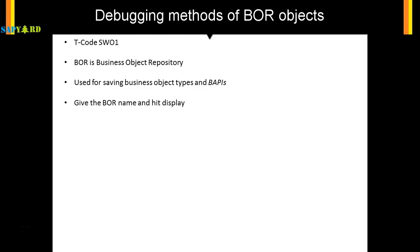Usually whenever you are working on a workflow, you have to create an object. If it is a custom object, it starts with Z or Y, and if it is a standard object, it can be any name. Once you give the BOR object name and hit Display, you will get a list of methods.